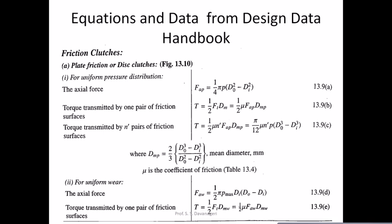Mu is the coefficient of friction. Based on the materials, you can select the value from table number 13.4, which will be shown in the next slide.